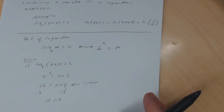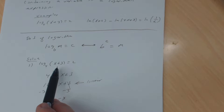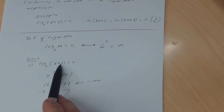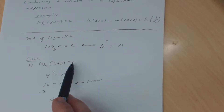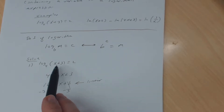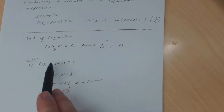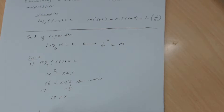4 squared is 16, so 16 equals x plus 3. Notice that we went from a log equation to a linear equation. All I have to do now is subtract 3, and I get x equals 13. Let's check: 13 plus 3 is 16, and 4 squared is 16 — so that's correct. x must be 13.